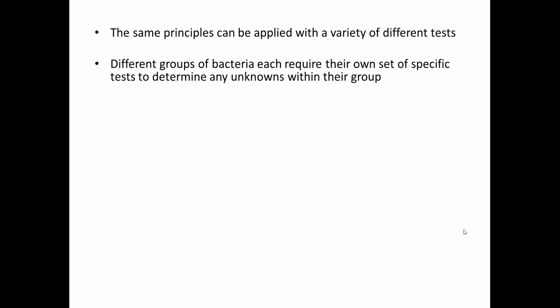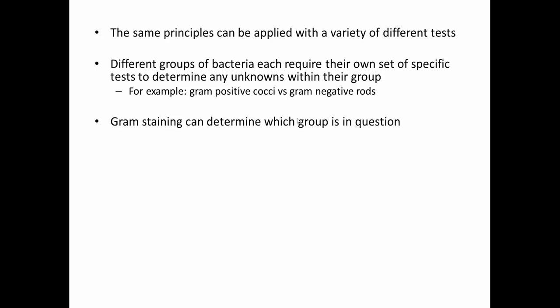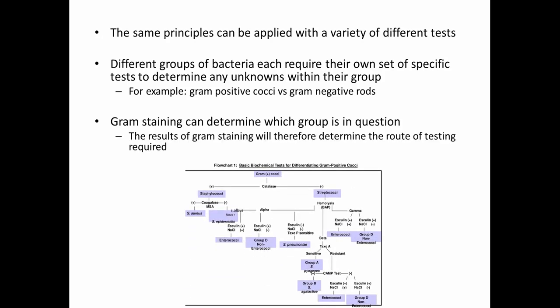These principles apply in general, but the truth is there are lots of different groups of bacteria, and different types of tests work better on different groups. We apply groups of tests to identify unknowns, but different groups require their own types of tests. For example, if we identify a gram-positive cocci with a gram stain, we'd use different testing protocols than we would for gram-negative rods like our enterics. Gram staining helps you find what group it belongs to, and then based on that group you can determine what route of testing to use. For gram-positive cocci, catalase would be one of the first tests, then coagulase or hemolysis, and so on — a flow chart of what tests to do and in what sequence.